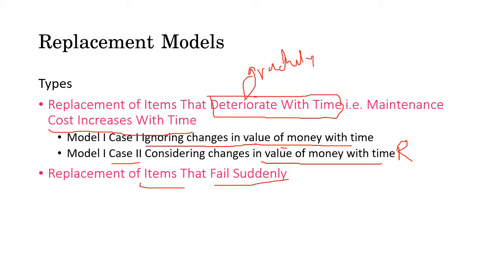The second category we study is the replacement of items that fail suddenly, like light bulbs. Naturally, this will be a probabilistic estimate, because we don't know when a particular component fails. In the next video, we will see Model 1, Case 1 — the analysis of replacement of items that deteriorate gradually, ignoring the time value of money.